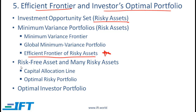We will then add a risk-free asset to the mix and create another version of the capital allocation line. Earlier we talked about the capital allocation line with just two assets. This is a more realistic capital allocation line with several assets, and again we will identify the optimal risky portfolio.